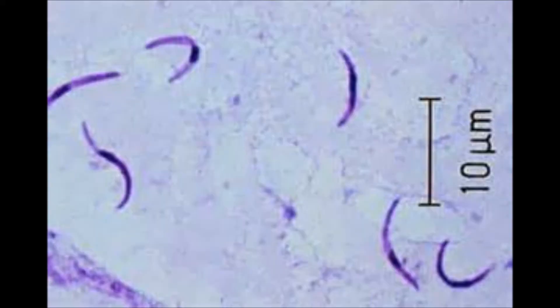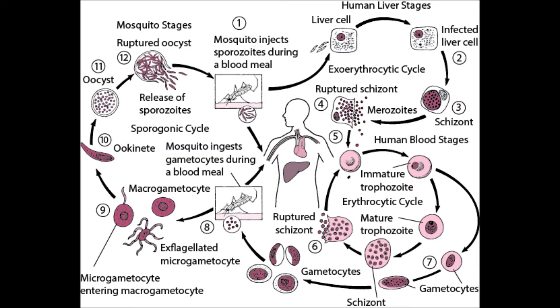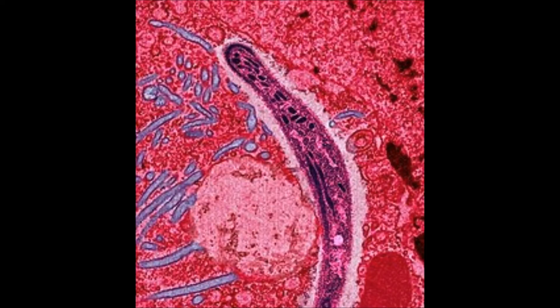The sporozoite is a spindle-shaped, uninucleate organism capable of wriggling movement. The sporozoites infect the liver cells and produce merozoites. The merozoites enter fresh RBCs and produce gametocytes.